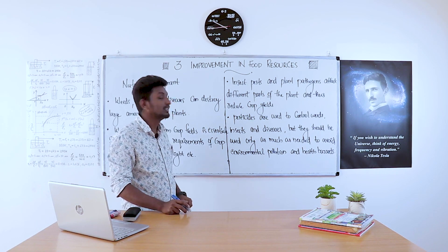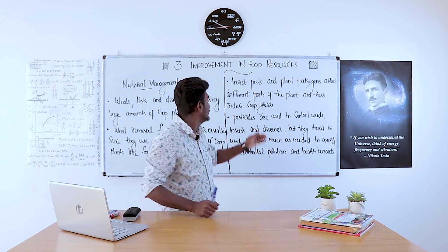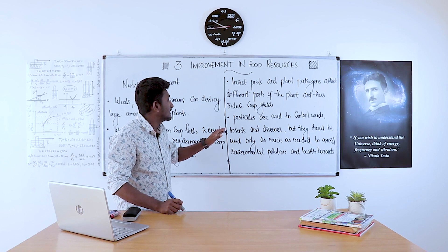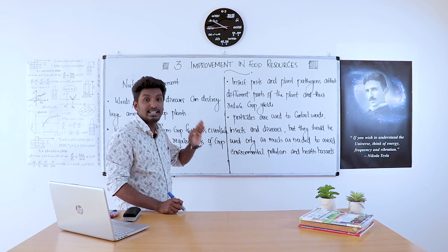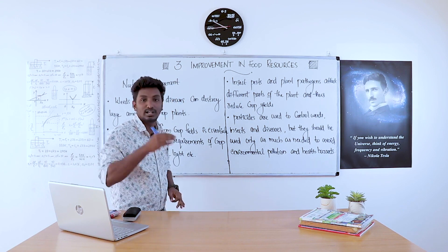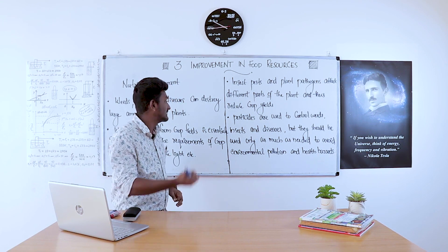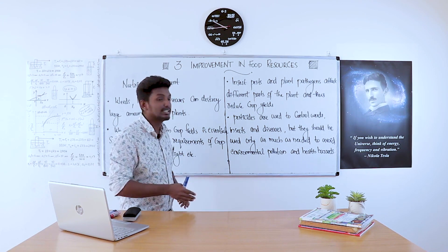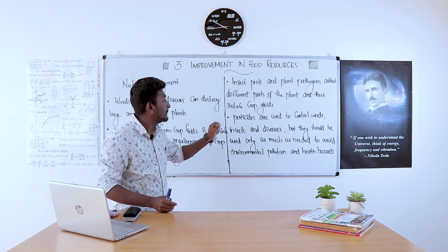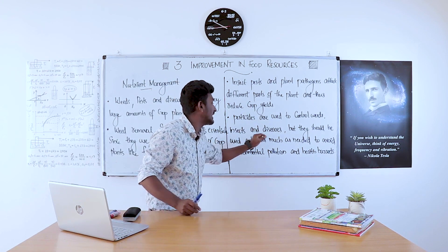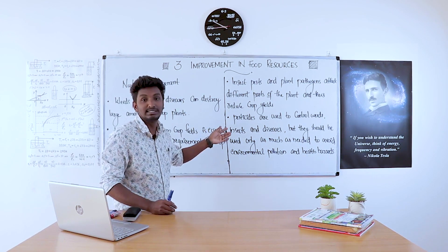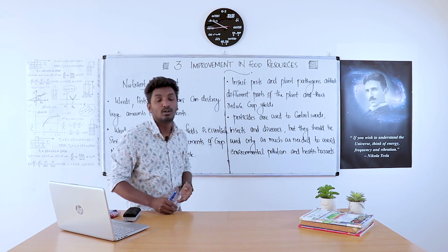Pesticides are used to control weeds. They can also be used to control insects and diseases. However, they should be used only as much as needed, as excessive use of pesticides may also harm our crops.